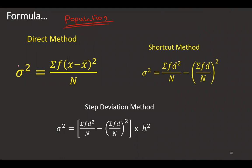If it is a population, I will denote it by sigma square. When it is a sample, population is denoted by sigma square and sample is denoted by s square. The only difference is in the denominator — I will put n minus one for sample and n for the population. For the mean, you have to write as mu, but sometimes for clarity we will be writing it as x bar itself for population also.